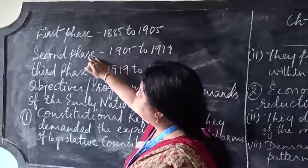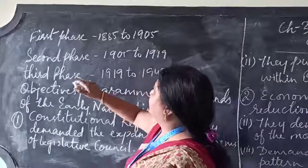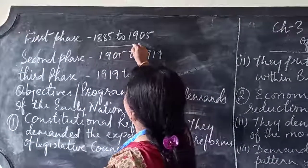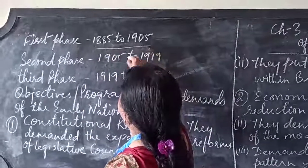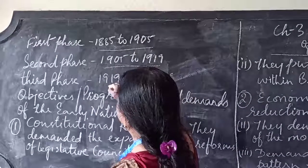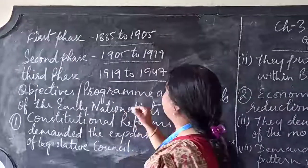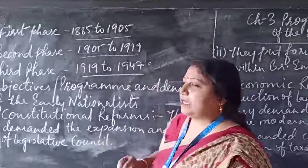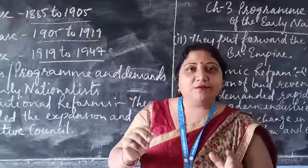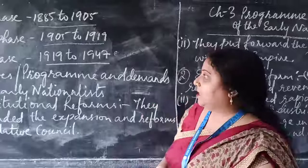The first phase is 1885 to 1905, the second phase is 1905 to 1919, and the third phase is 1919 to 1947. This is the National Movement divided into three phases.